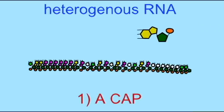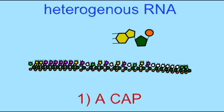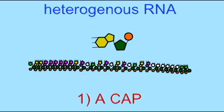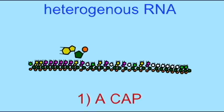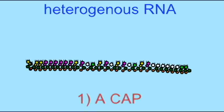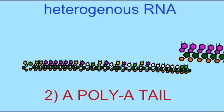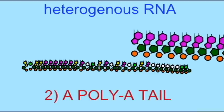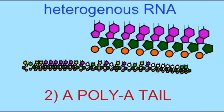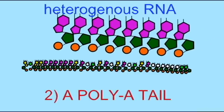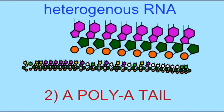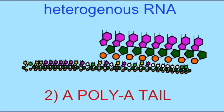First, a guanine cap is added to the RNA in a 5' to 5' bond. In other words, it is added to the 5' end of the hnRNA in the reverse position as the other nucleotides.